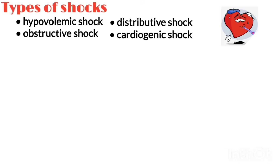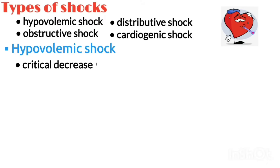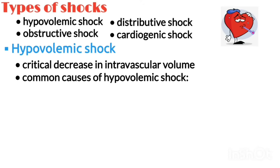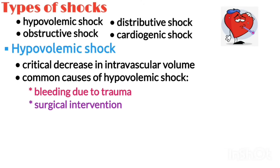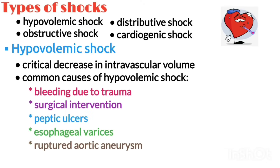Let us now discuss all these types one by one. Hypovolemic shock is caused by a critical decrease in intravascular volume. Common causes are bleeding, typically due to trauma, surgical interventions, peptic ulcers, esophageal varices, or ruptured aortic aneurysm.